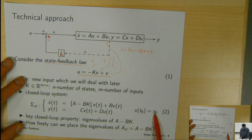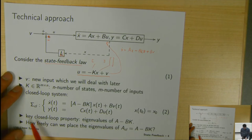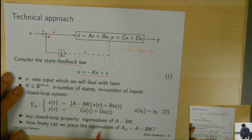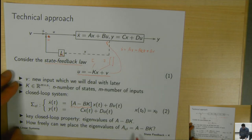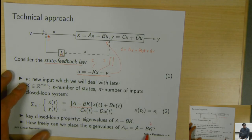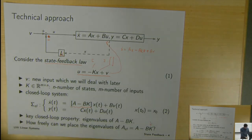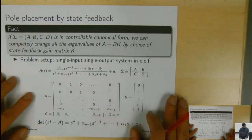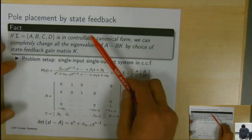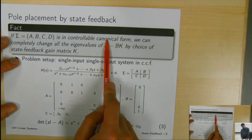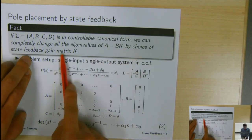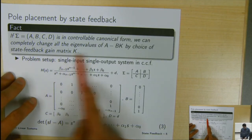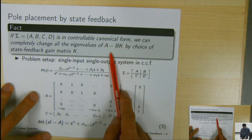The closed-loop eigenvalues come from the eigenvalues of the matrix A minus BK. By choosing the design variable K, we can determine how much we can change the closed-loop eigenvalues. It turns out that if the system is in controllable canonical form, we can completely change all the eigenvalues of A minus BK by choosing the state feedback gain K.